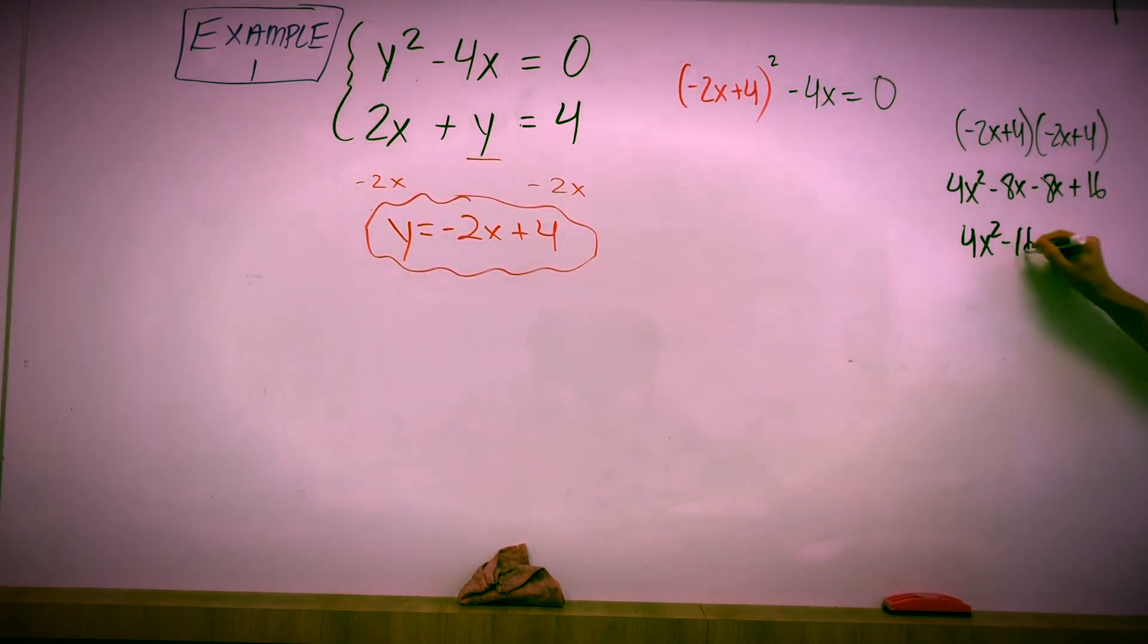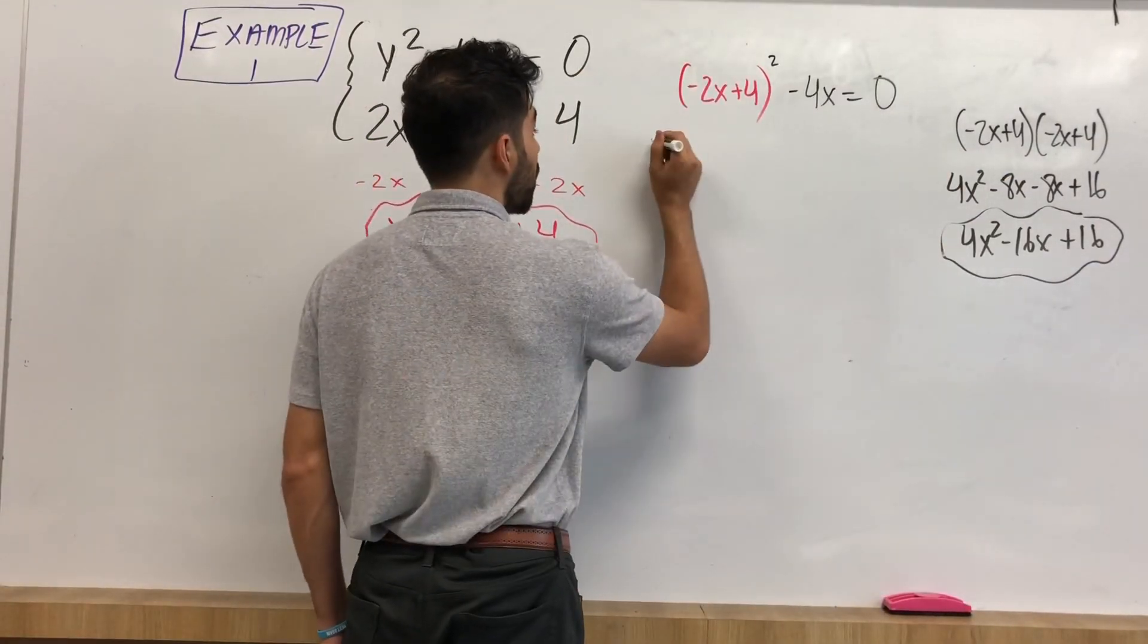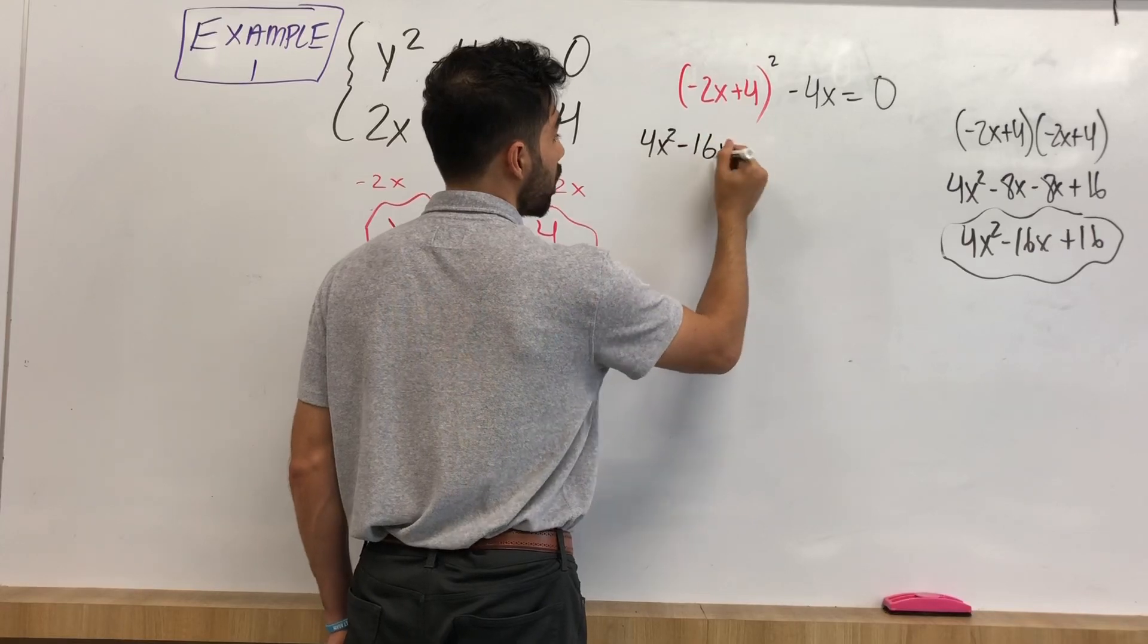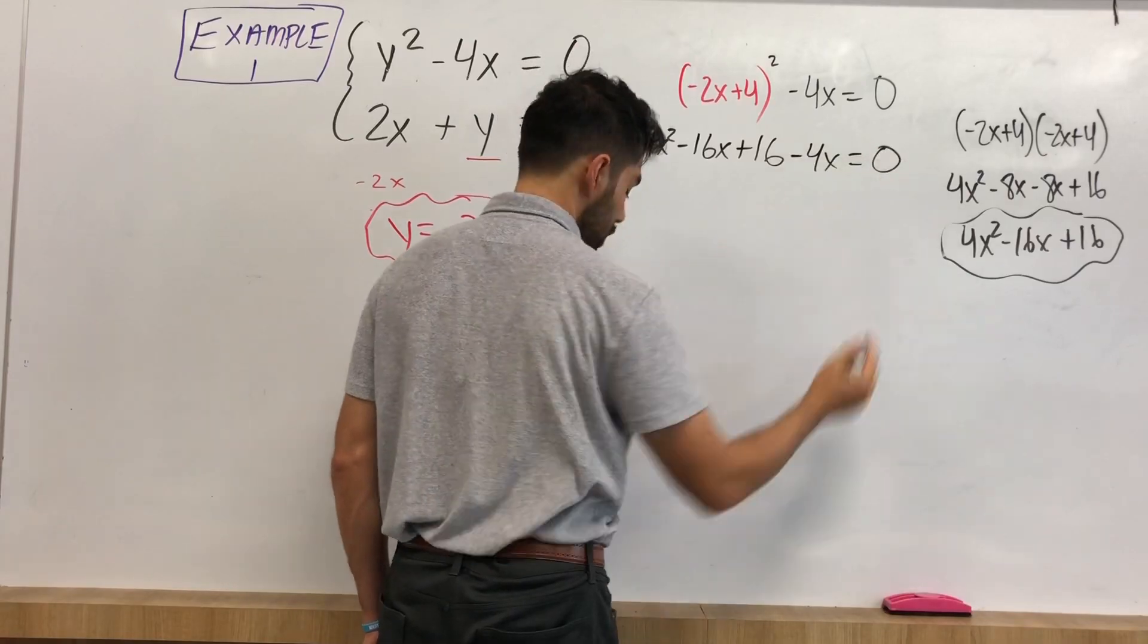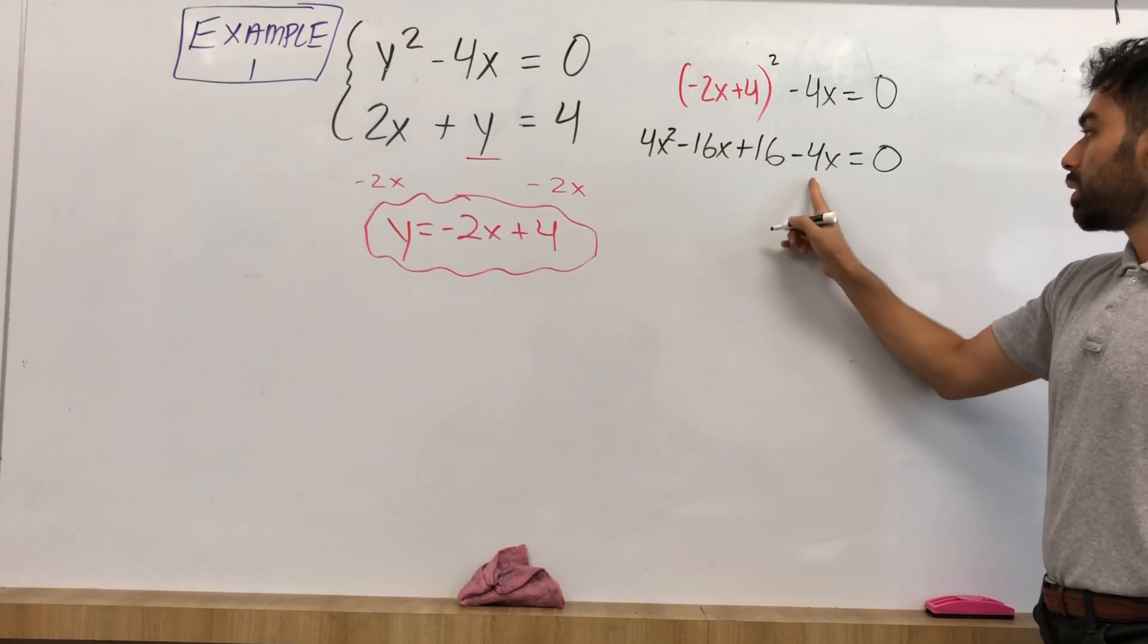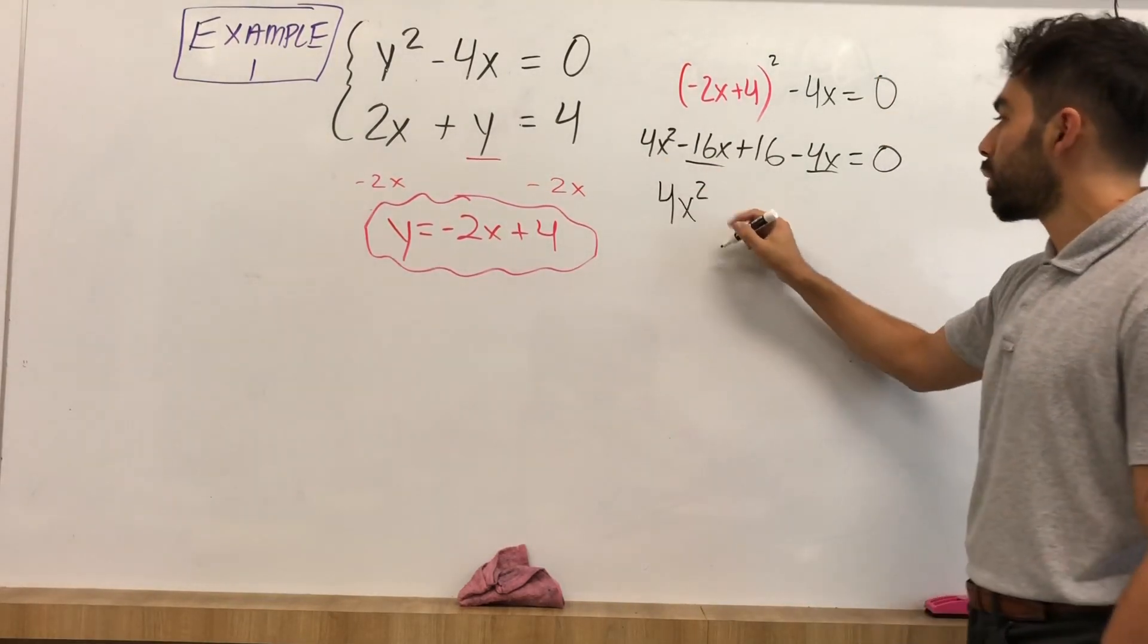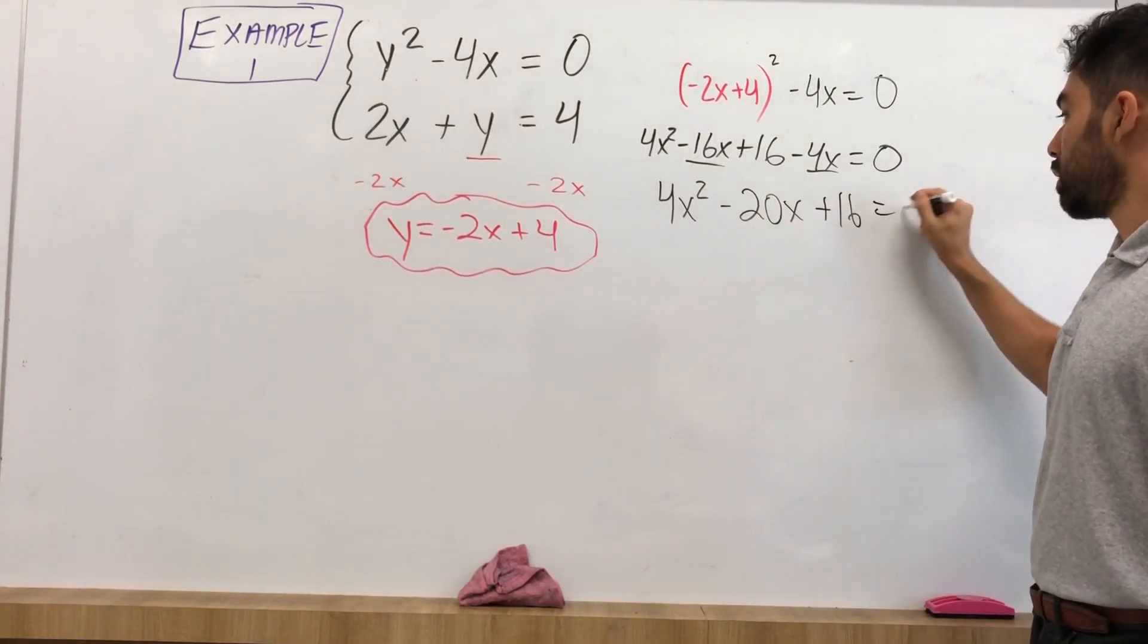So I have FOIL, let's go ahead and put that in for negative 2x plus 4 squared, and I have negative 4x is equal to 0. Let's clean this up a bit. Let's combine like terms. I have negative 16x and negative 4x. Those are like terms that I can combine. So I have 4x squared by itself, negative 20x plus 16.